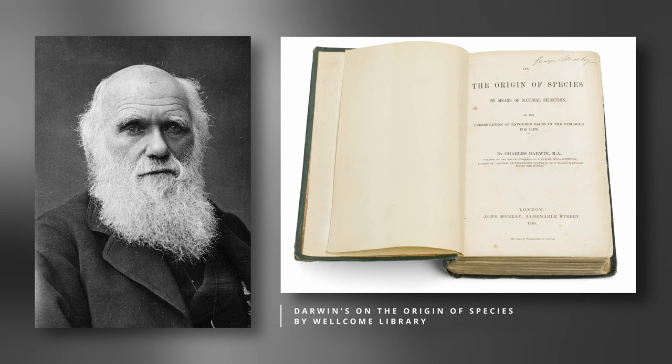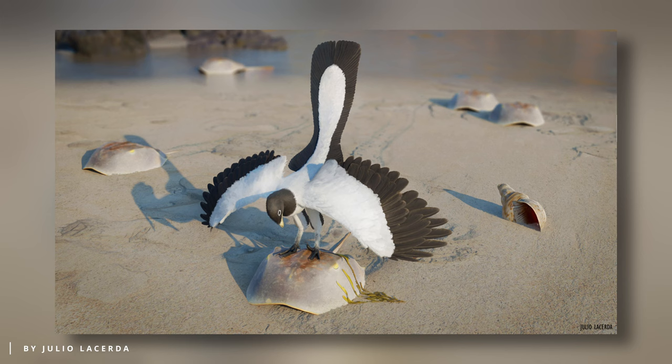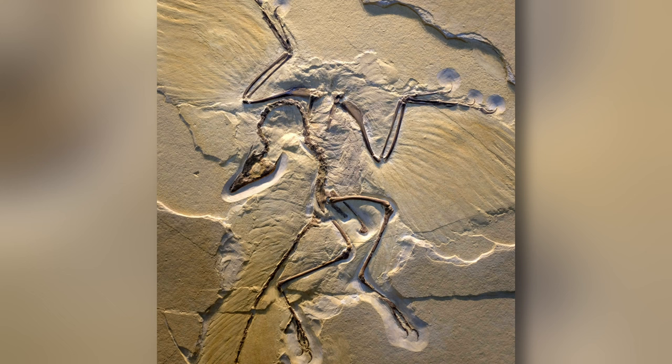Just two years after publishing his first book, On the Origin of Species, Darwin received news about the discovery of perhaps the most remarkable transitional fossil ever found: the Archaeopteryx, a raven-sized member of the family Archaeopteryx, that lived in what is now Germany during the late Jurassic period, around 150 million years ago.